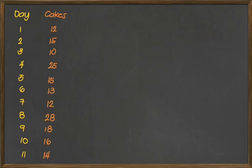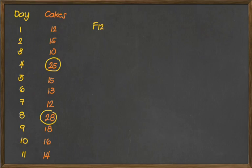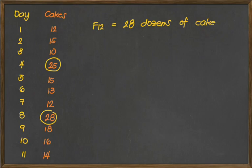For the cakes, the forecast on the 12th day — kasi nga ang ating seasons can be found on day 4 and day 8, so every 4 days siya. For a seasonal series, we only copy the same value of the last season as the forecast. Since 28 yung value of the last season, the forecast for the 12th day is also 28 — 28 dozens of cakes is projected to be sold on the 12th day.